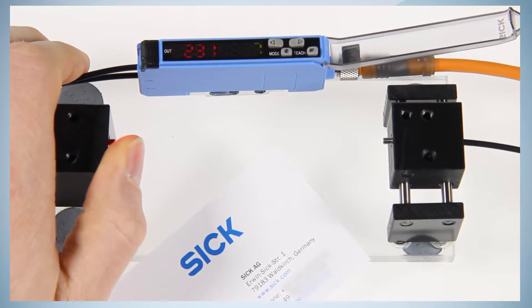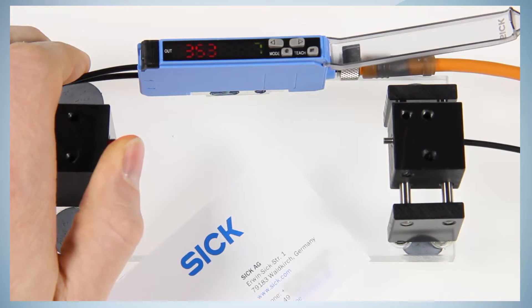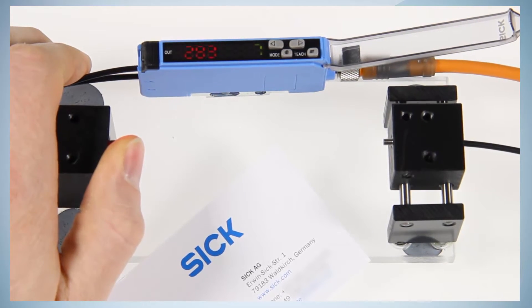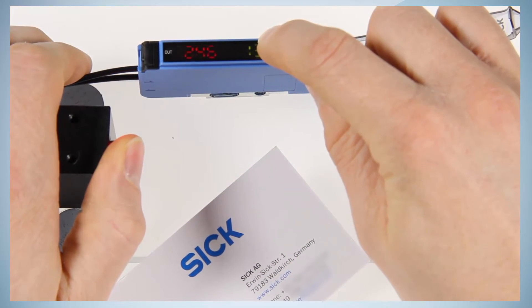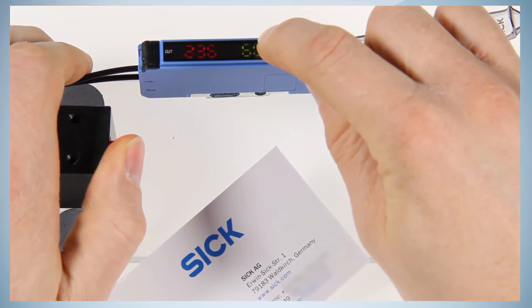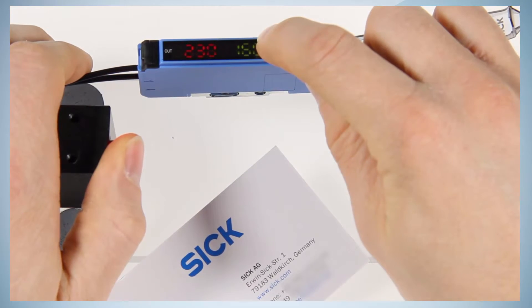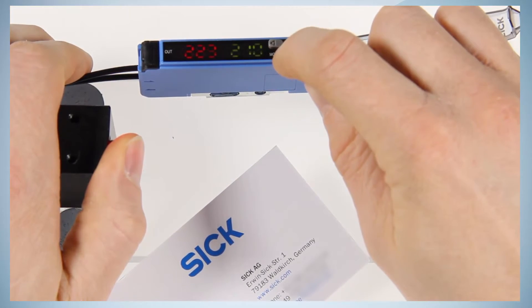The received light should still result in approximately 300 digits. Now set the switching threshold below the value which is received with the contamination of your finger. In this case, below 300 digits to for example 200 digits by using the plus or minus button.